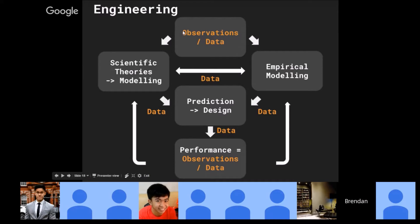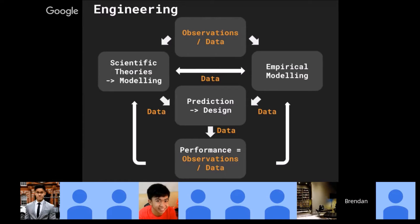Looking at the engineering diagram again, you can see that data transfers between scientific theory modeling and empirical modeling. After modeling you also have data traveling to the design stage, and from design to performance stages. You always have data feeding into them, letting you know the baseline or benchmark for your performance evaluations — and then it feeds back into the loop. Everything is powered by data.